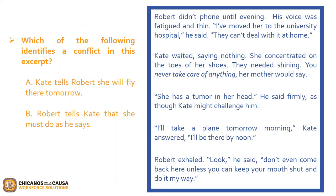The next question asks: which of the following identifies a conflict in this excerpt? Is it A, Kate tells Robert she will fly there tomorrow? Or is it B, Robert tells Kate that she must do as he says? If you selected B, Robert tells Kate that she must do as he says, you are correct. Robert challenges Kate by saying: 'Look, don't even come back here unless you can keep your mouth shut and do it my way.' By saying this, he's creating tension between the two of them, which is a part of conflict.